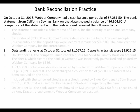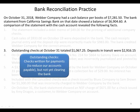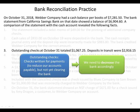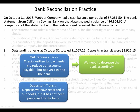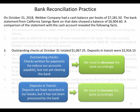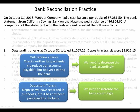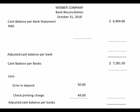Number three has two parts. First, outstanding checks on October 31 total $1,067.25. Outstanding checks are checks that we have written to pay off bills, but they haven't yet cleared our bank — we've mailed them out but the other company hasn't processed them yet, so our bank doesn't know about those checks. We need to decrease the bank balance for outstanding checks. Second, deposits in transit total $2,916.15 — a deposit we've recorded in our books but the bank hasn't processed yet. So we need to increase the bank balance for deposits in transit. On our bank reconciliation, we add the deposit in transit and subtract the outstanding checks.